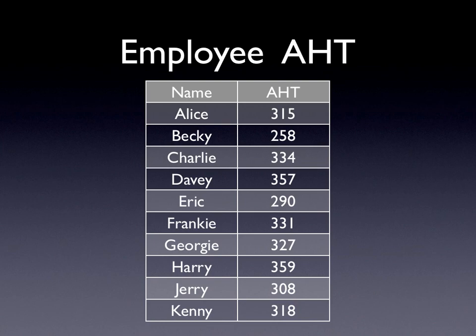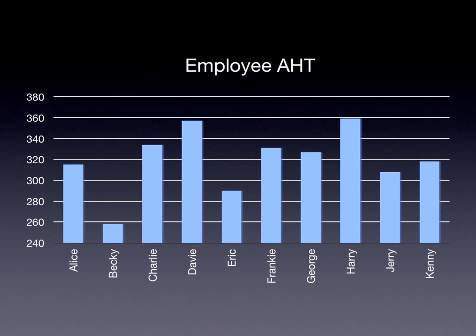Let's take a look at employee average handle time. With a list of 10 employees on the team, nothing is particularly striking about the numbers — they all kind of blend together. But when we graph that same data, we can clearly see quite wide discrepancies in employee average handle time, further accentuated when we put in a couple of bands. 300 is the low band — I don't want to see employees below that — nor above 340. You can see two employees fall below the lower band and two employees are above the highest band. That allows me to go back to the call center operations folks and say we need to spend more time with Becky and Eric and Davey and Harry to understand what they're doing differently from the rest of the team so we can get them back within band.